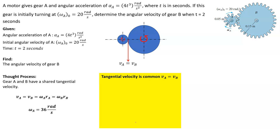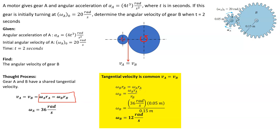We know the tangential velocity of A equals the tangential velocity of B, and the angular velocities of A and B are proportional based on those radii. We use the equation omega_A times R_A equals omega_B times R_B, then divide both sides by R_B to solve for omega_B. Plugging in the known values at 2 seconds: 36 radians per second times 0.05 meters over 0.15 meters — that's your gear ratio — and we get 12 radians per second.